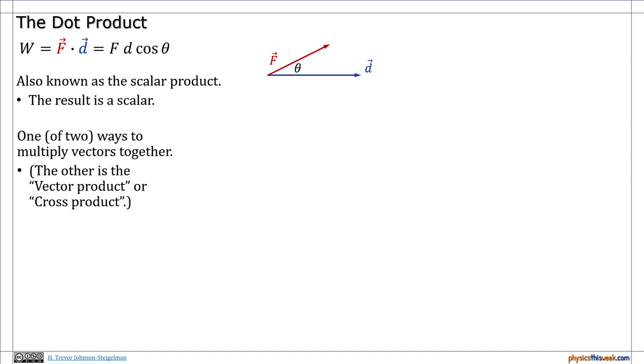Let's take a look at the dot product and what this dotting means. Two ways to write the dot product are f dot d or f d cosine theta. We also call this the scalar product because the result is a scalar. The vectorness kind of washes itself out whenever you do this type of multiplication. There are two ways to multiply vectors together. The other is known as the vector product or the cross product. We'll talk about it later when we talk about rotations and torques.